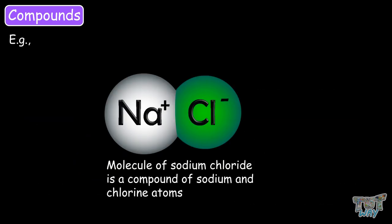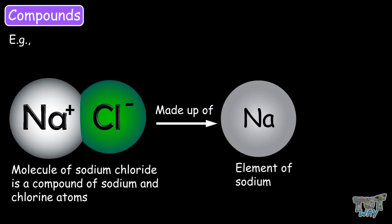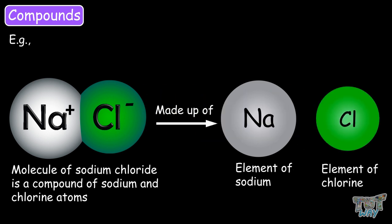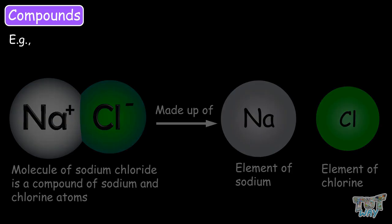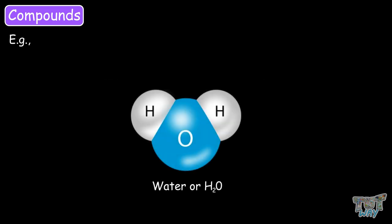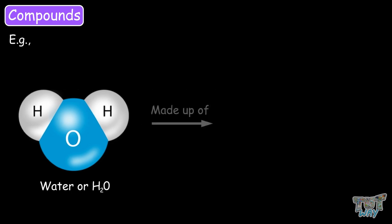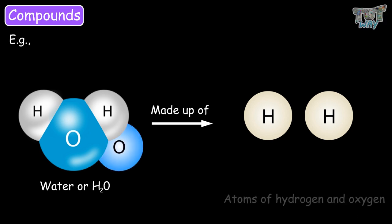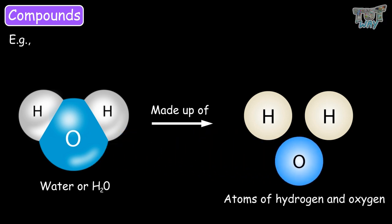Sodium chloride. It has two types of elements — elements of sodium and elements of chlorine. Each molecule of sodium chloride is written as NaCl, because each molecule of sodium chloride has one atom of sodium and one atom of chlorine. Water is a compound because it has two types of atoms — atoms of hydrogen and atoms of oxygen — and each molecule of water has two atoms of hydrogen and one atom of oxygen.